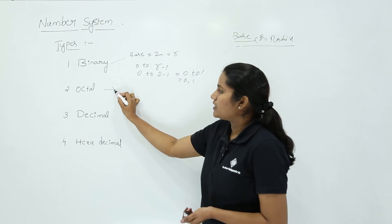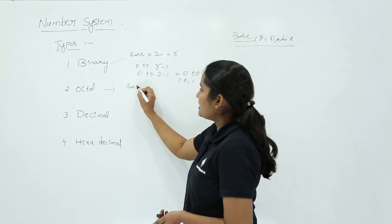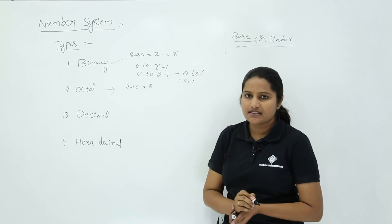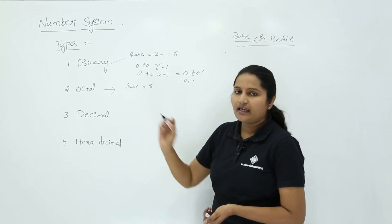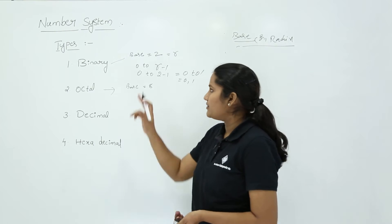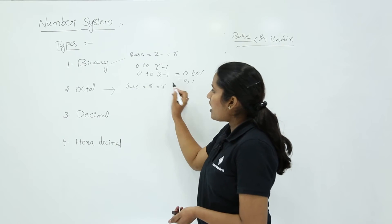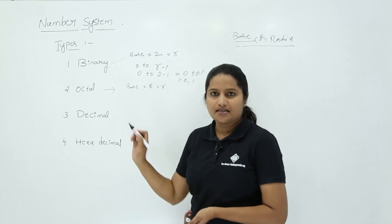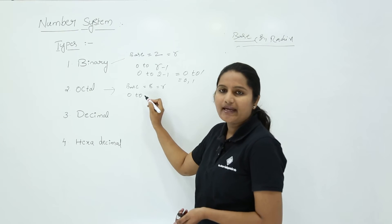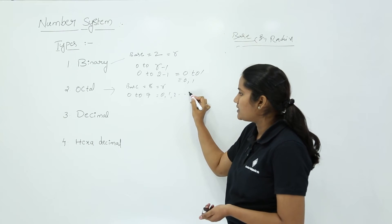Now let us see the octal number system. For octal, the base or radix is equal to 8. Using the same formula 0 to r minus 1, where r equals 8, the maximum number of digits we can use is 0 to 7. That means we can use digits 0, 1, 2, and so on up to 7.